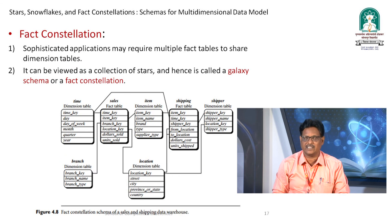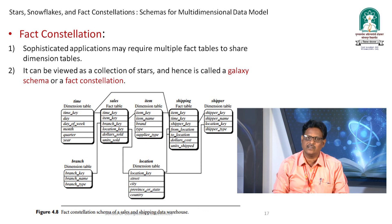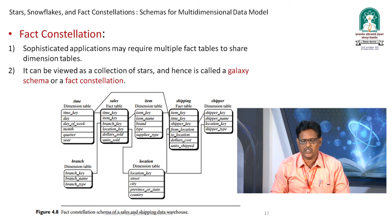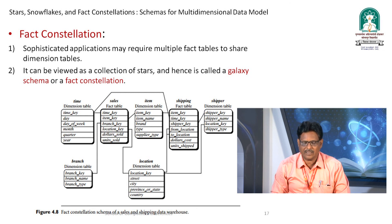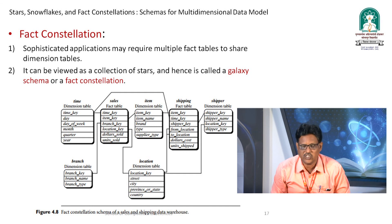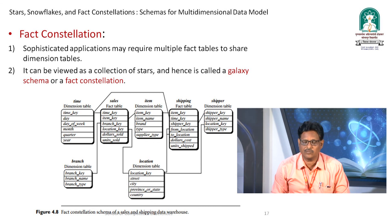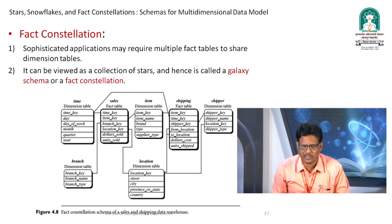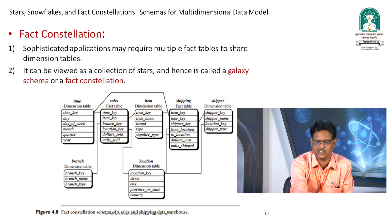The last schema is fact constellation, also called a galaxy schema. Sophisticated applications may require multiple fact tables with shared dimension tables. Here, we add a shipping fact table alongside the sales fact table, with shipper as an additional dimension. The item dimension is shared between both fact tables. This structure looks like a galaxy, which is why it is called a galaxy schema or fact constellation schema.